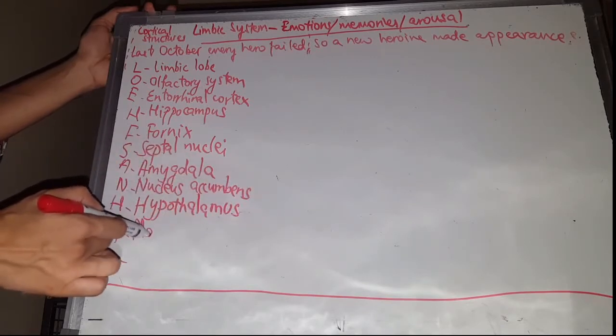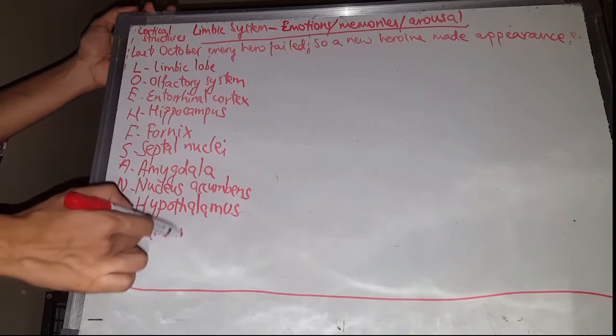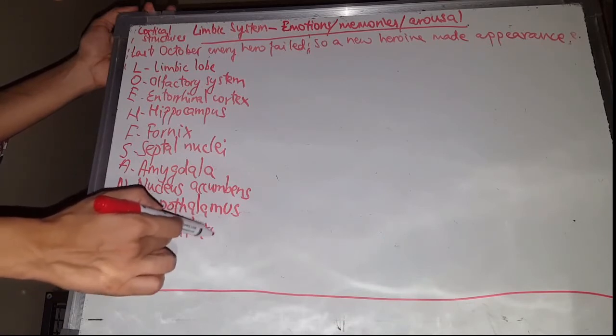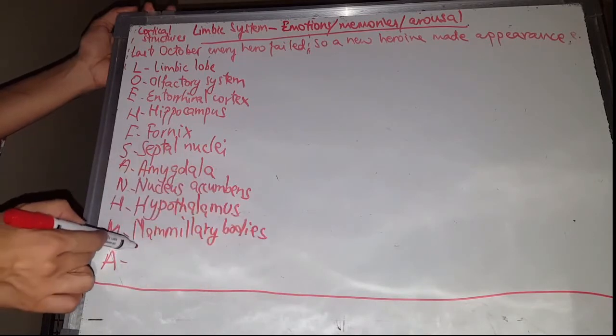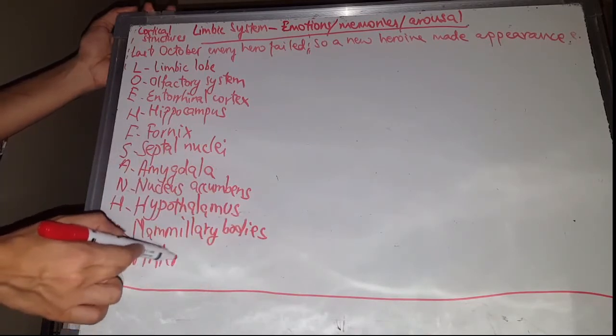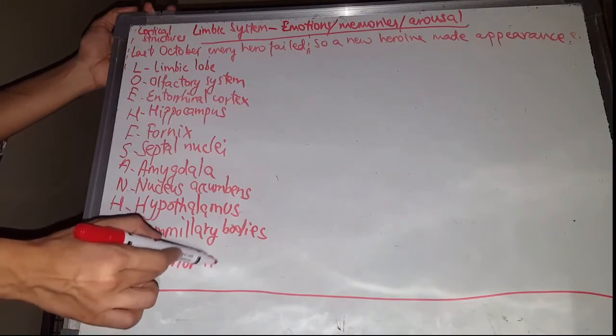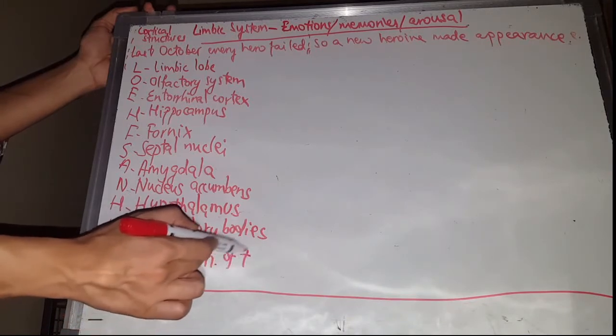M for the mammillary bodies, and A for the anterior nucleus of the thalamus.